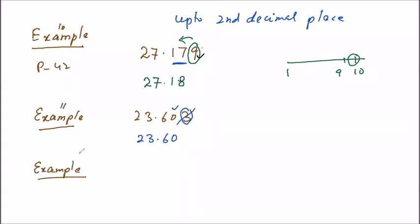Example number 12: 8.473. Now, again, see this number. This is smaller than 5. So, you will write 8.47. You will not change this one.